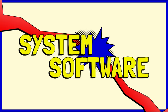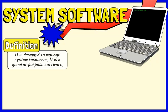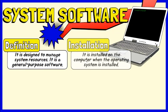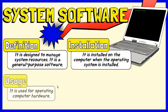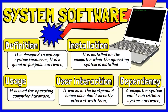System software is defined as the type of software that is the interface between application software and computer hardware. It is designed to manage system resources and is known as general-purpose software. It is installed on the computer when the operating system is installed, and it is used for operating computer hardware. It works in the background, hence users don't directly interact with it. It starts running when we turn on our computer system and stops when the system is turned off. System software can run independently and provides a platform for running application software.